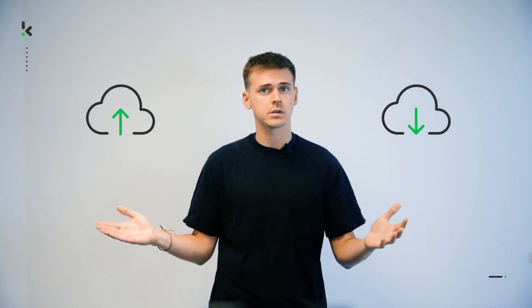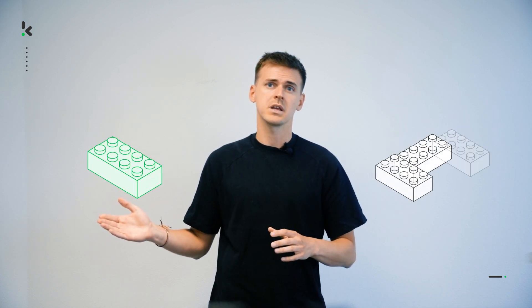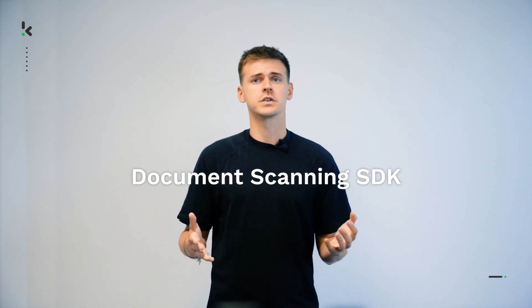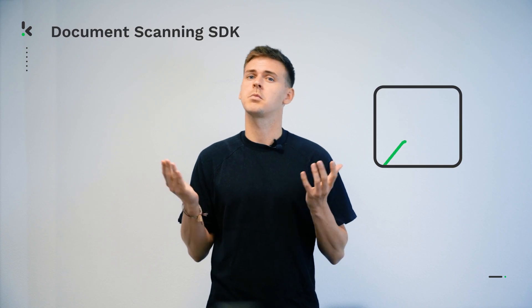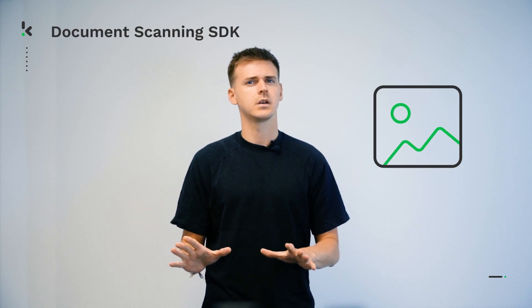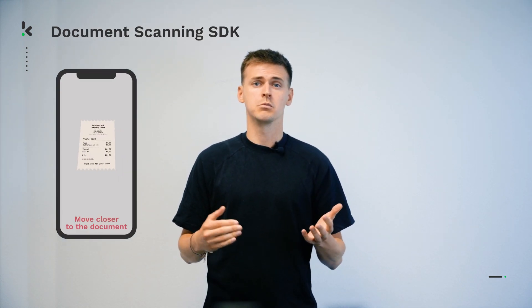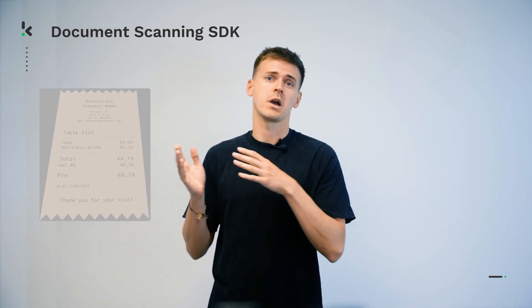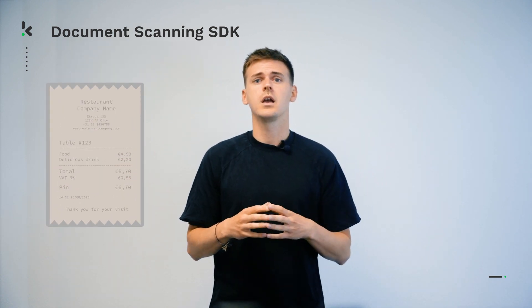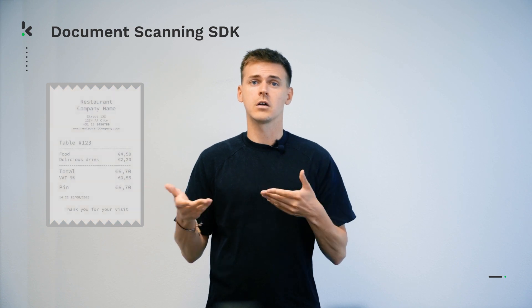Of course, the quality of the output of any API is heavily dependent on the quality of the input. That's why we've developed several SDKs that can help your users optimize the input quality. These building blocks can be integrated in your application. For example, our document scanning SDK offers several features to make sure your users make the best possible picture of a document. This is done by providing feedback like moving closer to the document, by cropping and warping the image, and by optimizing the color and contrast.